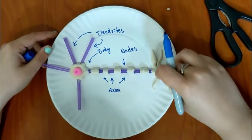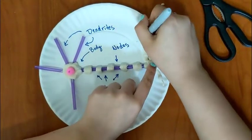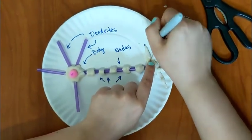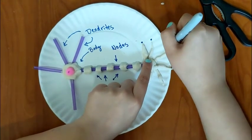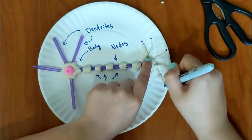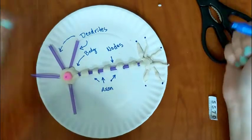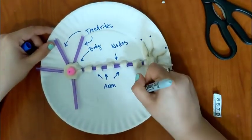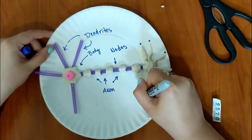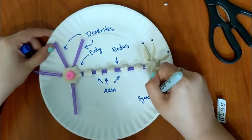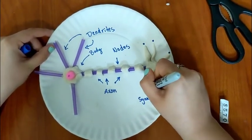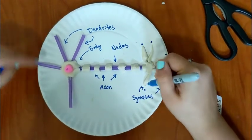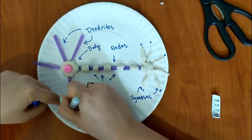And those nodes help the signal jump along the axon all the way down to our synapses where neurotransmitters are released into the surrounding interstitial fluid. And these are our synapses right here.